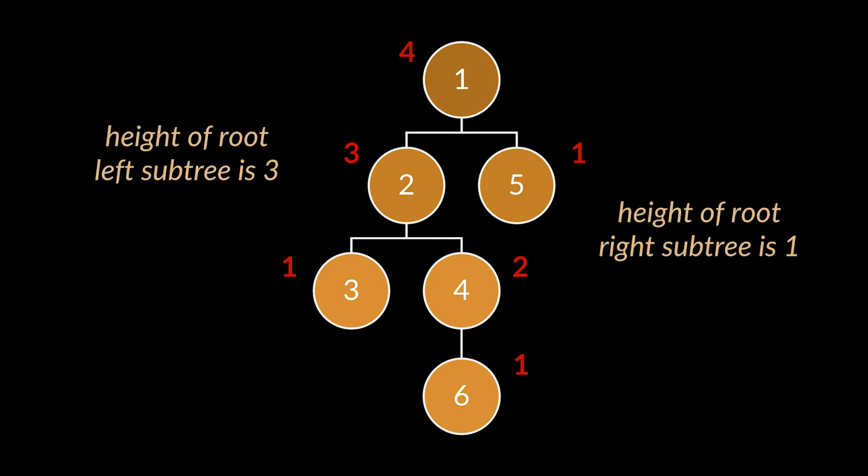If we keep applying this logic on all the nodes in the tree, we will obtain the respective heights of the right and left children of the root node. And if the difference between these heights is not bigger than one, then this tree is said to be balanced at its root.